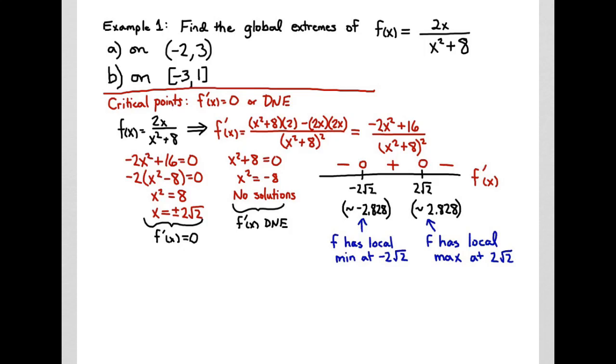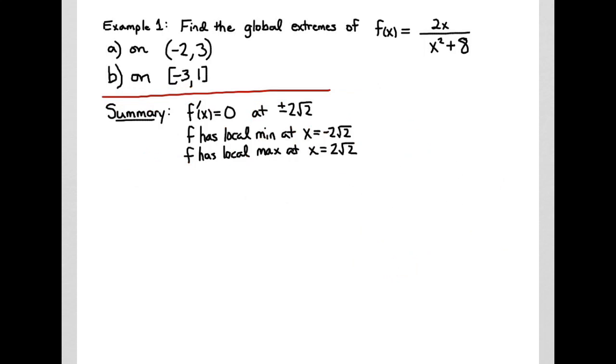I want to emphasize that the word 'at' is for points representing an x value. Here's our summary. Using our first derivative, we have decided that we have two critical points and we've categorized them: f has a local minimum at -2√2, and f has a local maximum at +2√2.